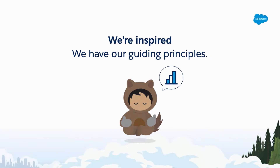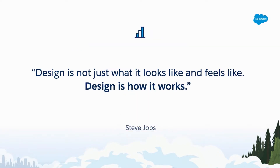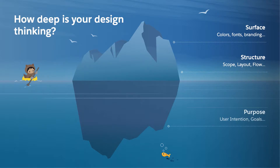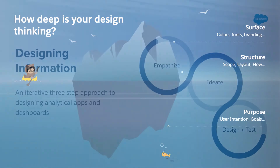Time for action. One of my favorite Steve Jobs quotes: it's not just what it looks like and feels like — design is how it works. Often when we think about design thinking, we start at the surface — that's where most people think about design: colors, brands, fonts. You go deeper, you have structure — the layout of the app, the scope of the app, how you navigate and flow between pages. But at the deepest level, the part you never really see is purpose — that's your user's intentions and their goals. Just like an iceberg, that's the deepest part, and that's where you want to spend the majority of your time.